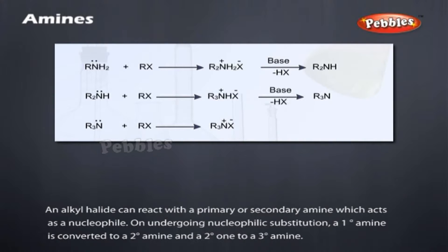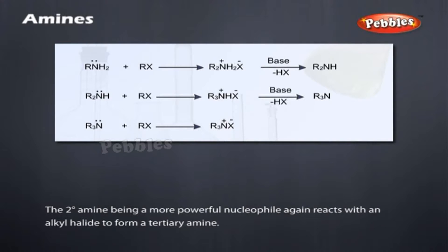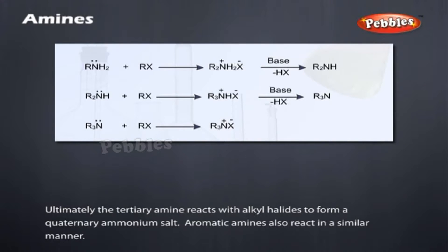Alkylation: An alkyl halide can react with a primary or secondary amine, which acts as a nucleophile. On undergoing nucleophilic substitution, a primary amine is converted to a secondary amine, and a secondary amine to a tertiary amine. The secondary amine, being a more powerful nucleophile, again reacts with an alkyl halide to form a tertiary amine. Ultimately, the tertiary amine reacts with alkyl halides to form a quaternary ammonium salt. Aromatic amines also react in a similar manner.